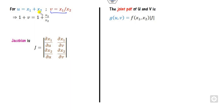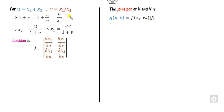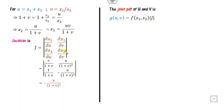Substituting, u = x1 + x2 becomes u = x2·v + x2 = x2(1 + v), so x2 = u/(1 + v). Then x1 = u·v/(1 + v). Alternatively, you can add 1 to both sides. Substituting x1 and x2, you find the Jacobian, which equals u/(1 + v)².